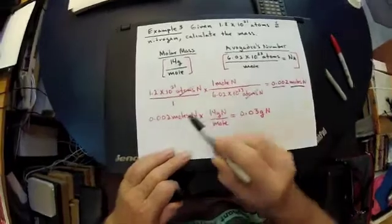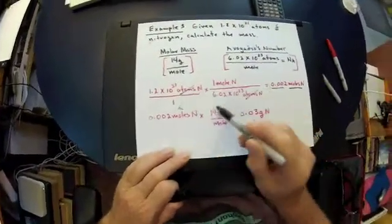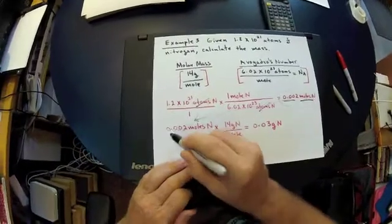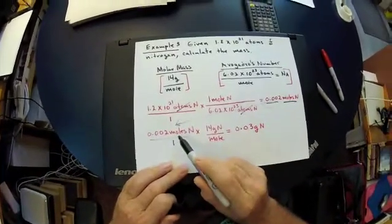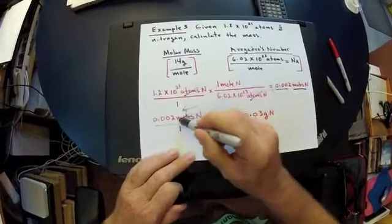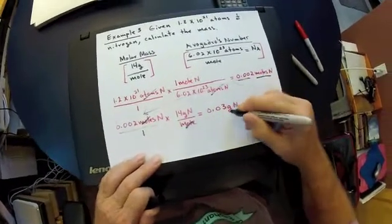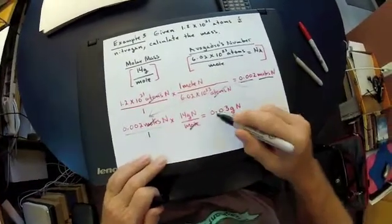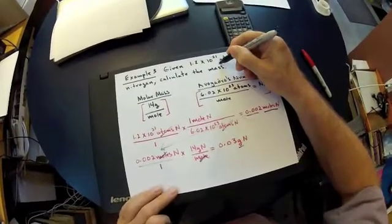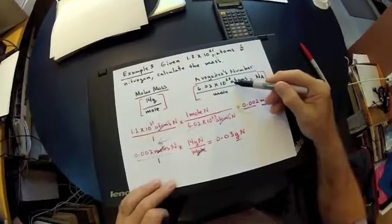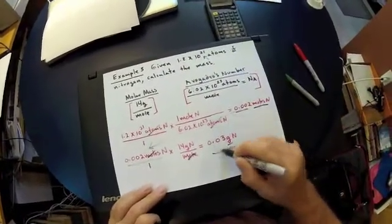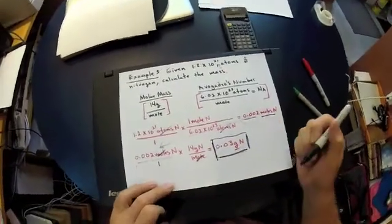We're halfway there — we know the moles of nitrogen. Now we convert from moles of nitrogen to mass of nitrogen. We multiply 0.002 moles of nitrogen times the molar mass: 14 grams per mole. The moles cancel, and we get 0.03 grams of nitrogen. This is a small mass, but that makes sense — we started with a small number of atoms, 10 to the 21st, compared to Avogadro's number at 10 to the 23rd, so we expect a relatively small mass.